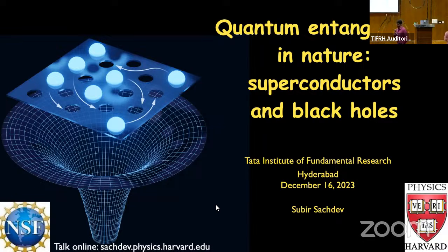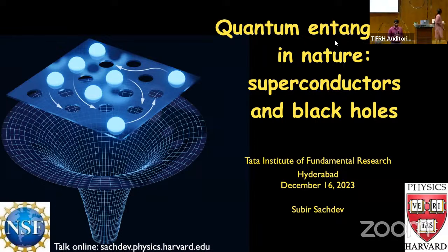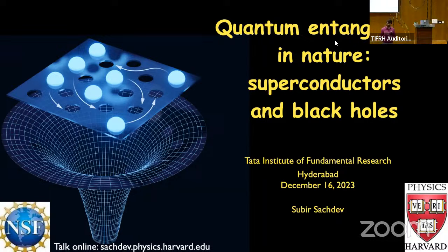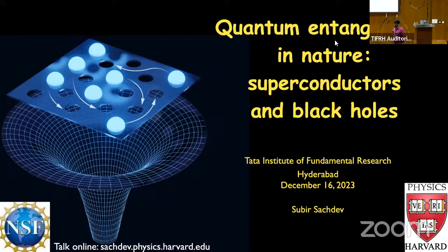Professor Subhir Sachdev did his undergraduate studies partly at IIT Delhi and then at MIT, and went on to pursue his PhD at Harvard University. After that he was briefly at AT&T Bell Labs, which was very instrumental in research in the United States until the early 90s. He then joined Yale University, where he did many interesting works on quantum phase transitions and wrote his first book, Quantum Phase Transitions. Thereafter he moved to Harvard University, where he is Hershel Smith Professor since 2005.